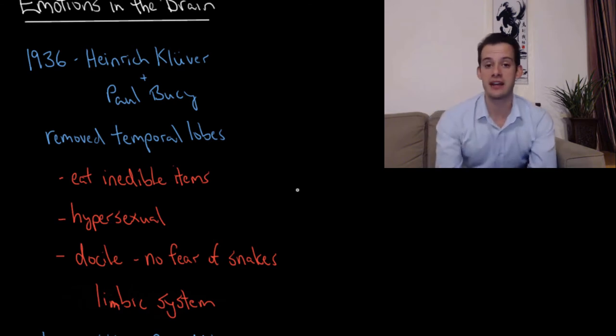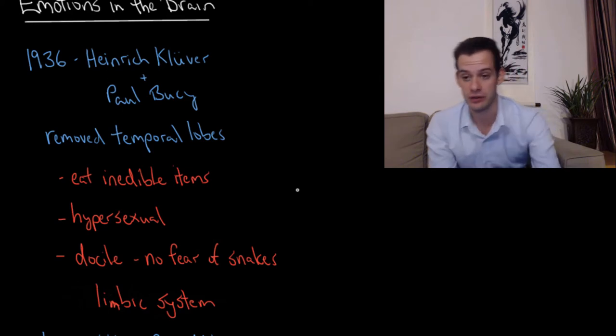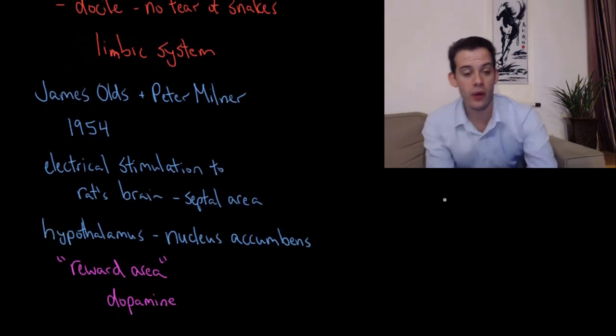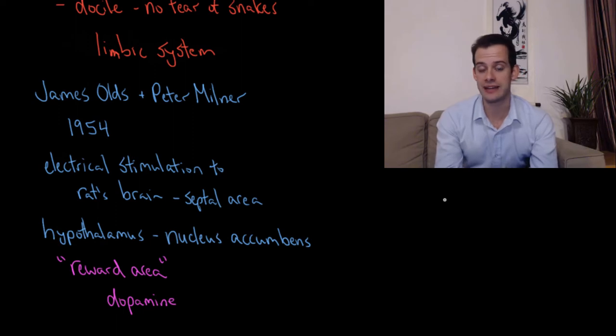In order to understand these areas of the limbic system that are involved in these symptoms, we're going to look at some research conducted in the 1950s by James Olds and Peter Milner. Olds and Milner surgically implanted electrodes into the brains of rats, and these electrodes were then connected to a lever so the rat could self-administer electrical stimulation to this area of the brain that the electrode was connected to.